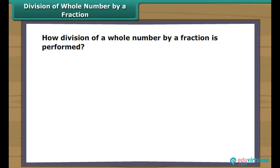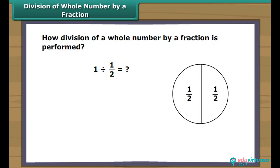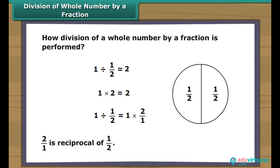Division of a whole number by a fraction: Let us take the example of 1 divided by one-half. We divide a whole into equal parts such that each part is half of the whole, giving us two half parts. So 1 divided by one-half equals 2. Also, 1 multiplied by 2 equals 2, so 1 divided by one-half equals 1 multiplied by two-upon-one. Two-upon-one is the reciprocal of one-upon-two.